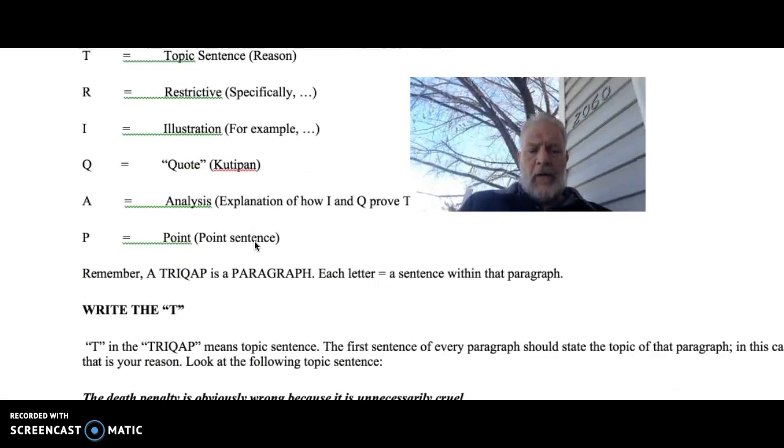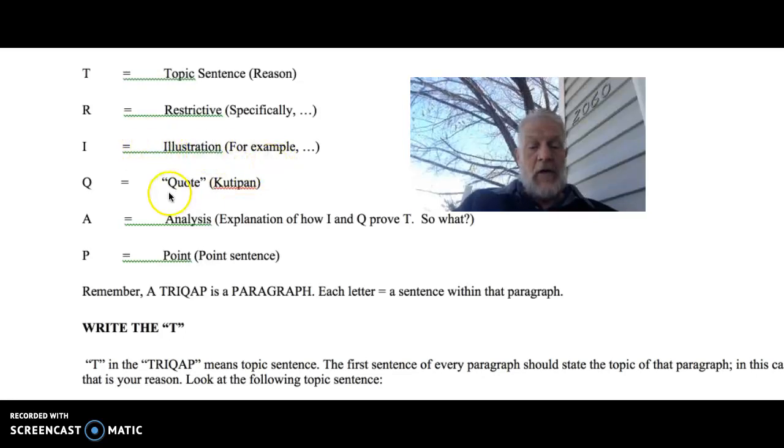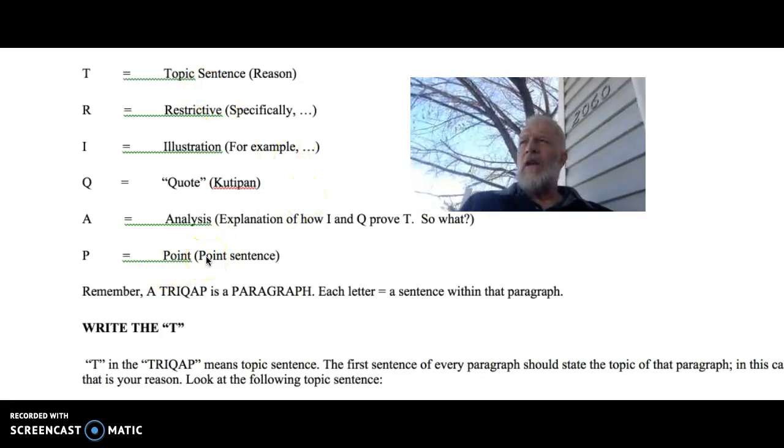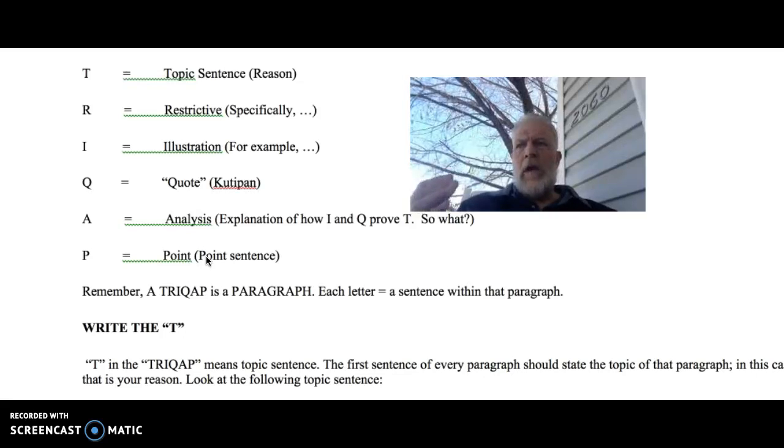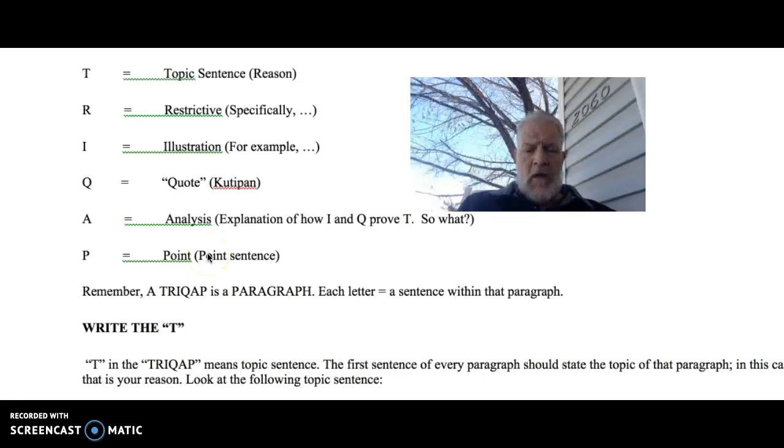The other part of this is something called the analysis. You explain how I and Q prove T. So how does your illustration and how does your quote prove your topic? So what? Lastly, your point. Your point sentence is the call to action. It is the way that you are trying to not only convince your audience of the persuasive reality of your argument, but you're also trying to call them to some sort of action. For example, in the buckle up paragraph we read in class, it was to try to convince people it's important to buckle their seatbelts.